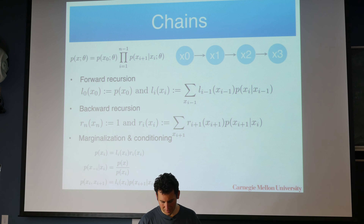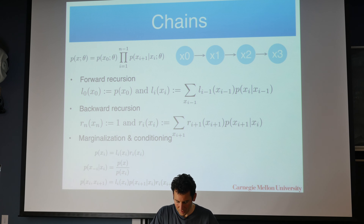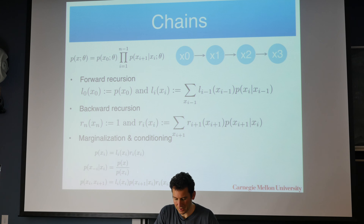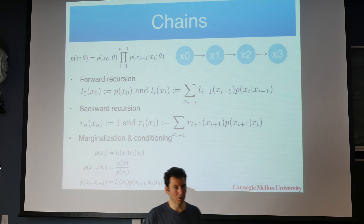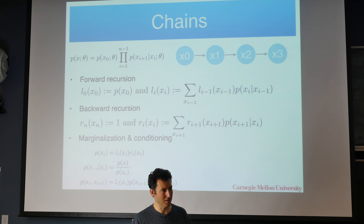There's a one-to-one correspondence between many algorithms in numerical linear algebra and what you're doing in graphical models, which is nice because you can import a lot of ideas. So let's look at the entire thing formally. We have the left message L_i(x_i) given by taking the previous left message, multiplying by P(x_i | x_{i-1}), and summing over x_{i-1}. The same from the right: we start with the right message being 1 (or the corresponding conditional probability if we observe something), then keep summing back. Marginalization: P(x_i) is just left times right; conditioning is done by dividing by suitable terms.